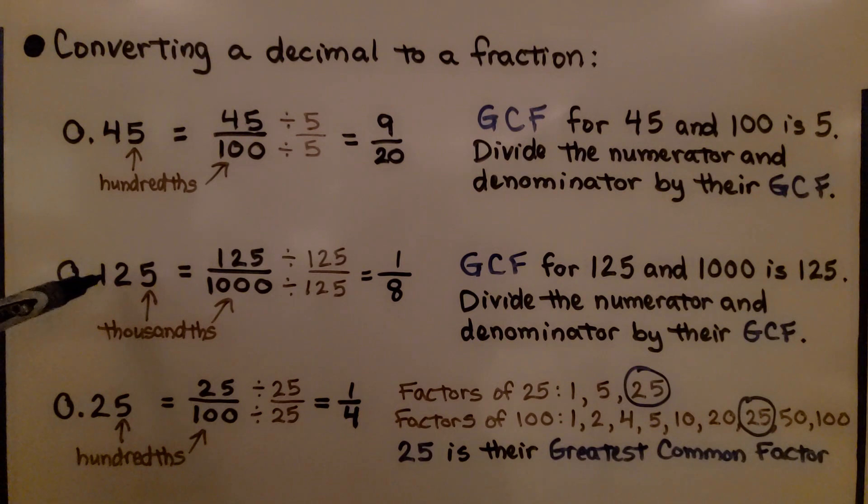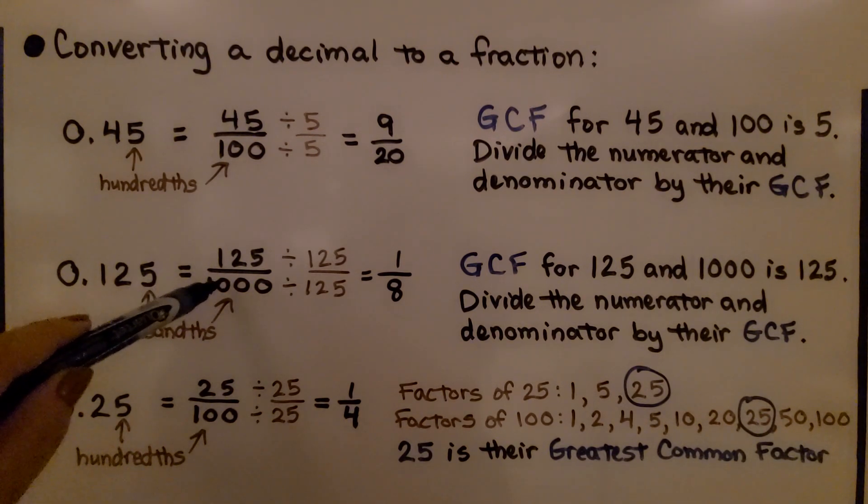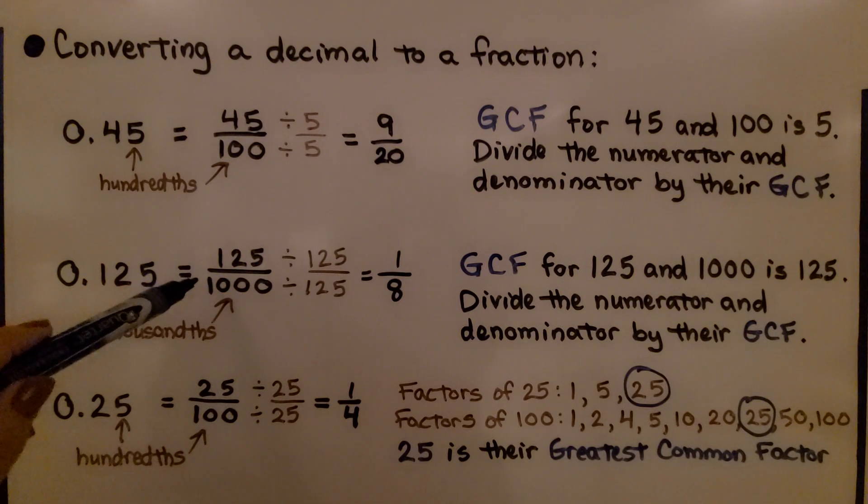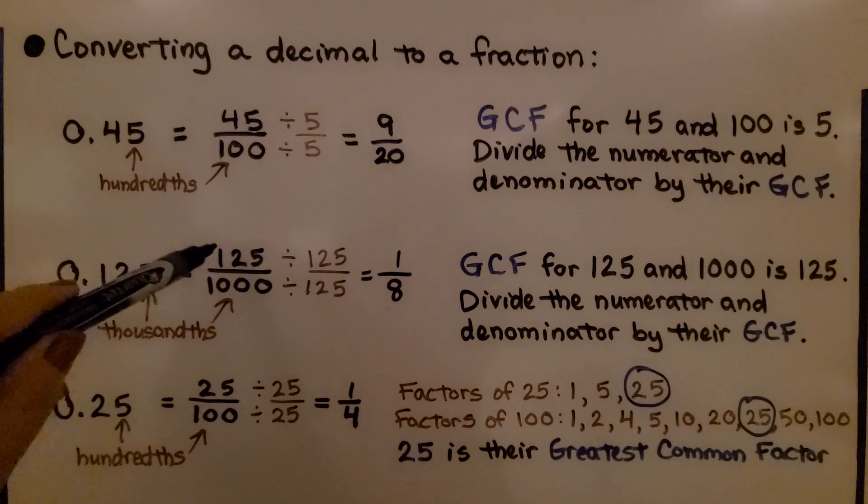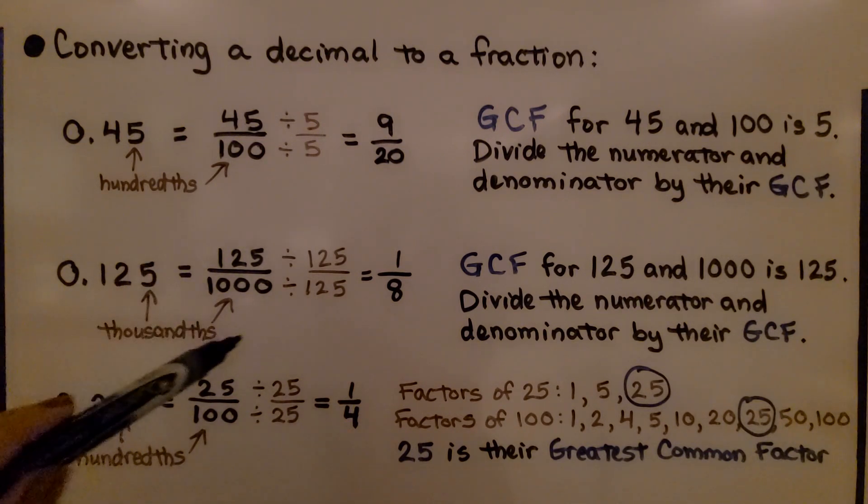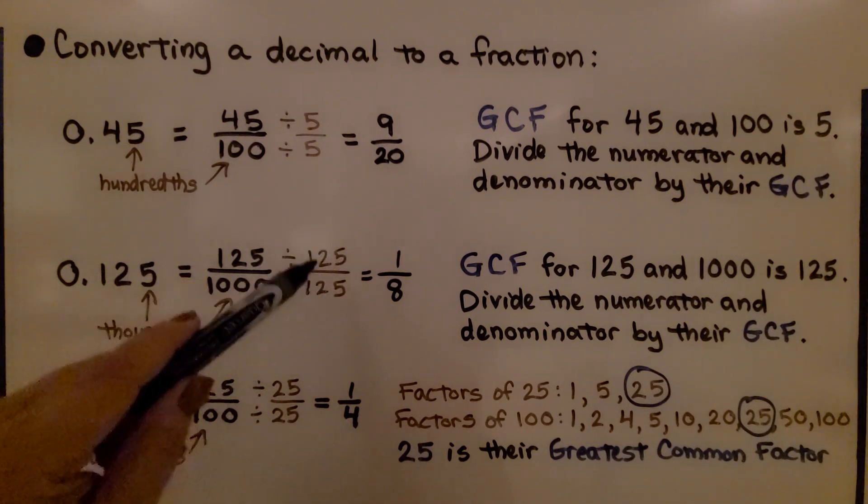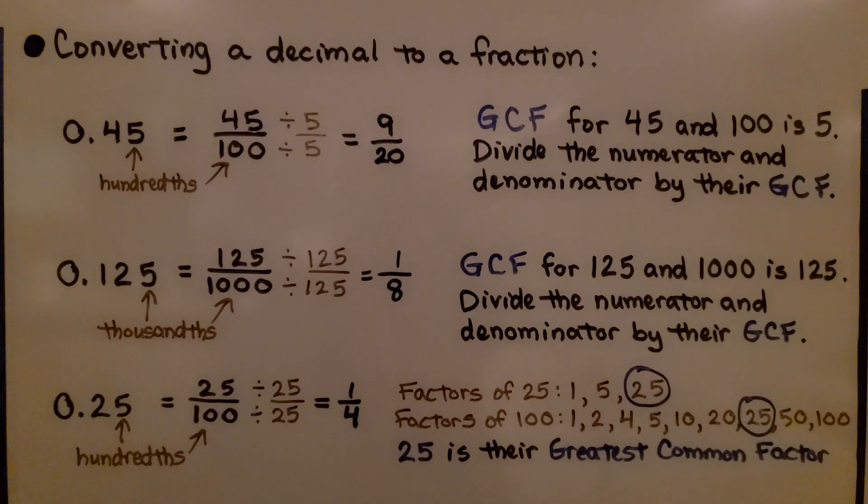If we have 125 thousandths, that's the thousandths place. We write it over 1000. We find the greatest common factor for 125 and 1000, which is 125, and we divide the numerator and denominator by that GCF. We get 1/8.